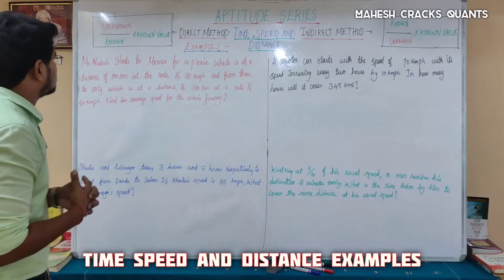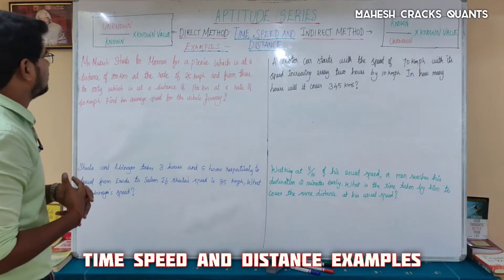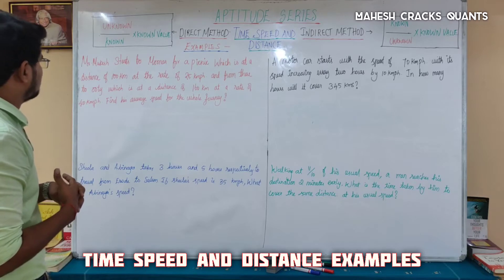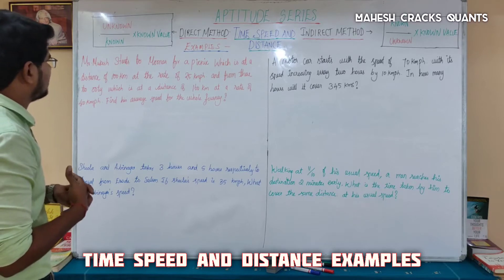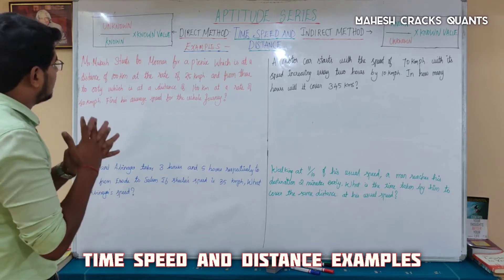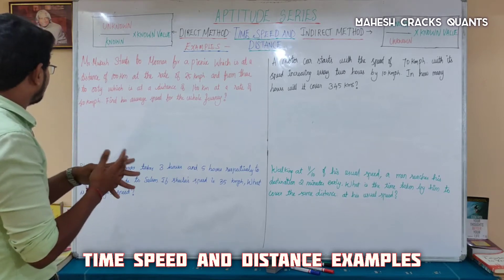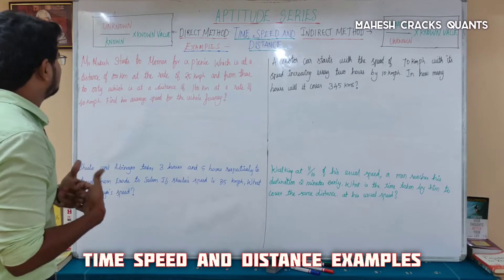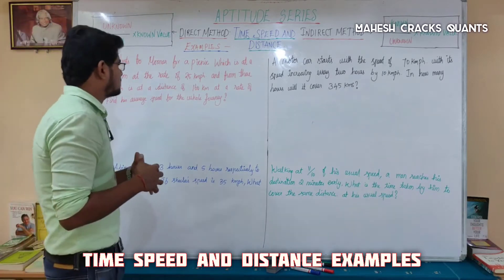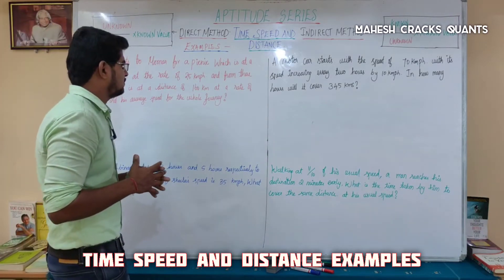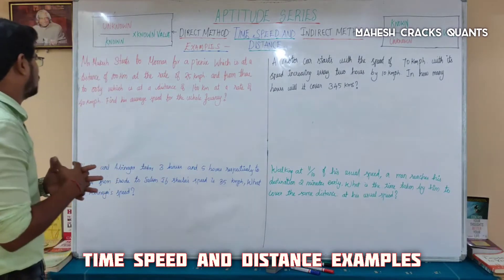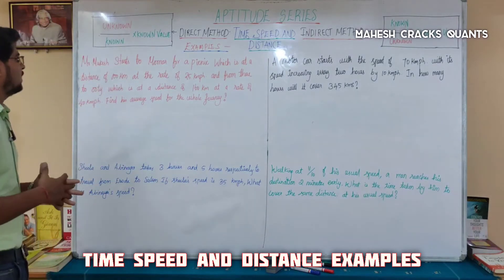Mr. Mukesh starts to move for a picnic which is at a distance of 100 km at the rate of 25 km per hour. And from there to Ooty, which is at a distance of 160 km at the rate of 40 km per hour.